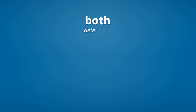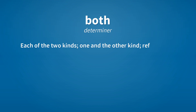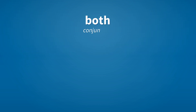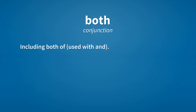Both — determiner. Each of the two kinds, one and the other kind, referring to several individuals or items which are divided into two groups. Both — conjunction. Including both of, used with 'and.' Example: Both you and I are students.